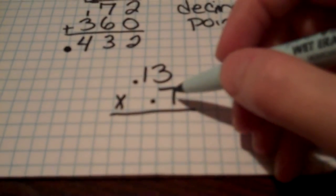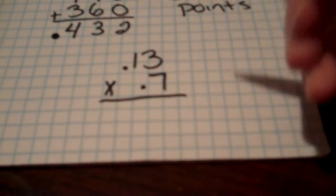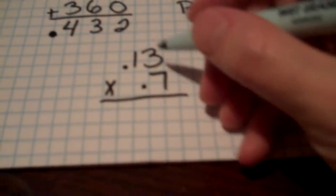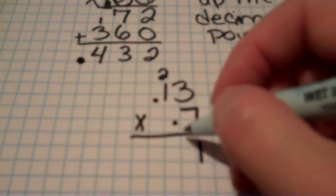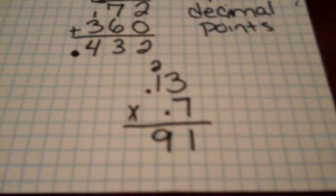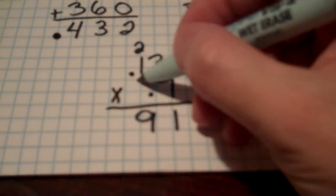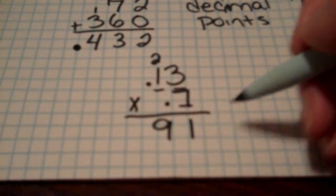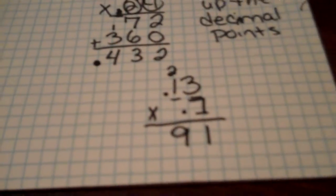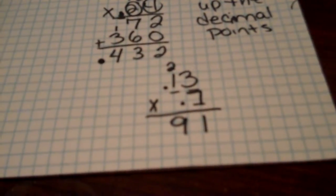All right. So if you paused me like you were supposed to you would have multiplied 7 times 3 is 21. Carry my 2. 7 times 1 is 7. Plus 2 is 9. Well I've got 1, 2, 3 numbers behind the decimal point. I've only got 2 numbers in my answer. What on earth am I going to do?